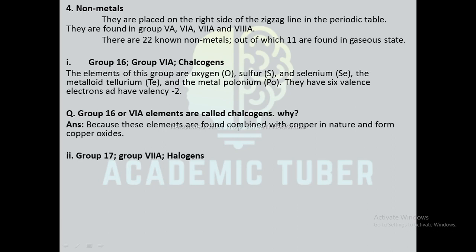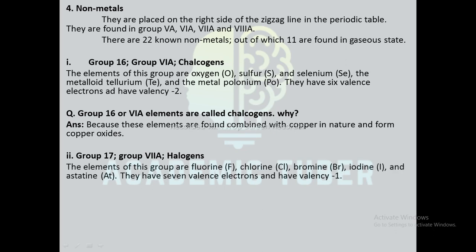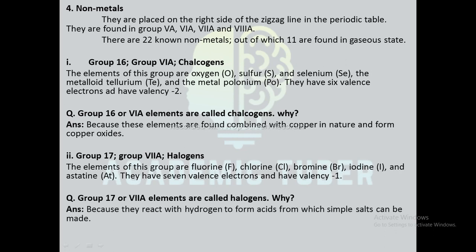Group 17 or halogens (group 7A): the elements of this group are fluorine, chlorine, bromine, iodine, and astatine. They have 7 valence electrons and have valence -1. Group 17 or 7A elements are called halogens because they react with hydrogen to form acids from which simple salts can be made. Simply put, halogens means salt producers.